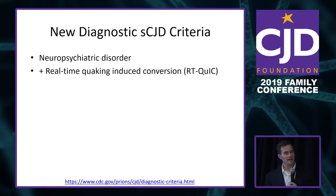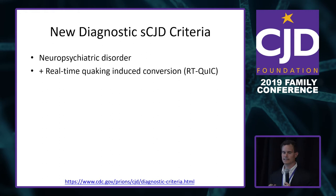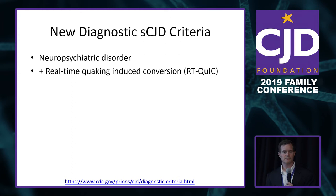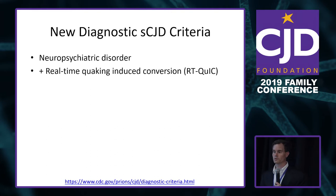Last fall, CDC updated their criteria drastically. We now have a test called RT-QuIC — real-time quaking-induced conversion — which actually detects the abnormal prion protein in spinal fluid. It's so specific that CDC now considers a case probable prion disease if they have any neuropsychiatric disorder with a positive RT-QuIC. No other neurodegenerative illness is diagnosed this way — we're actually surpassing diagnostic specificity of Alzheimer's, Parkinson's, and frontotemporal dementia.